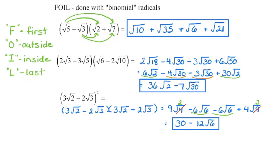You might also remember the shortcut for squaring a binomial: square the first term, so 9 times the square root of 4 — square root 4 to get 2, and 2 times 9 is 18. Double the product: 3 times negative 2 is negative 6, times 2 gives a coefficient of negative 12, with radicand 6. Square the last term: negative 2 times negative 2 is positive 4, and 3 times 3 is 9. Square root the 9 to get 3, and 3 times 4 is 12. Adding 12 to 18 gives 30. As you get faster, you'll be able to do more of this mentally.